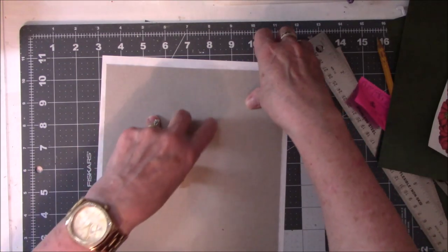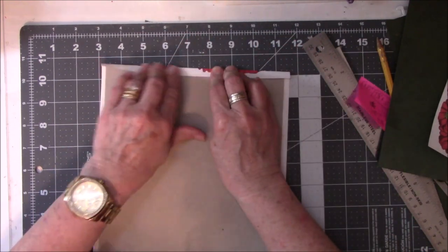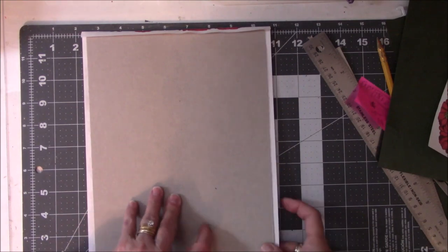So you lay it down on your chipboard or whatever you're using, cereal box, whatever, and then I folded up the edges to make sure there was enough to go all the way around.